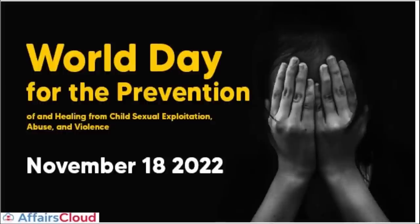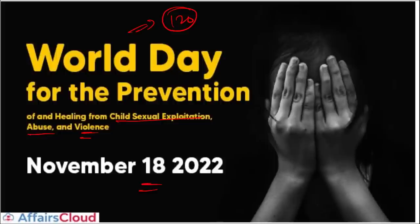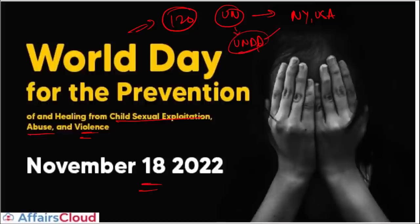The World Day for the Prevention of and Healing from Child Sexual Exploitation, Abuse and Violence is observed on 18th November. A resolution was passed by the UN General Assembly to observe this day, which was co-sponsored by more than 120 countries. This day is committed to raising public awareness for those affected by child sexual abuse, and to prevent and eliminate child sexual exploitation, abuse and violence. The UN headquarters is in New York, USA.